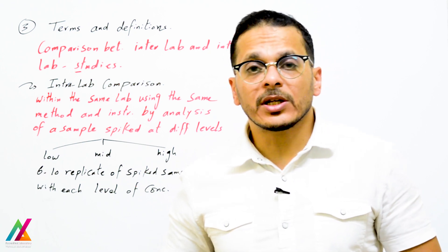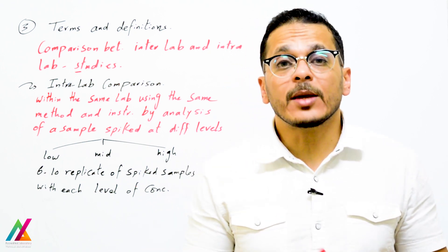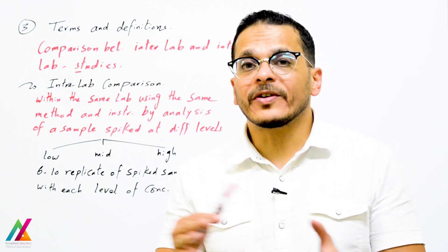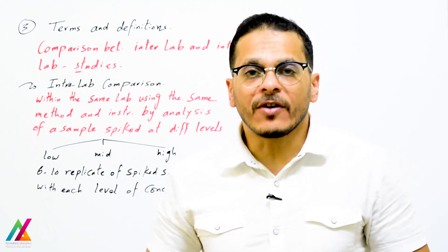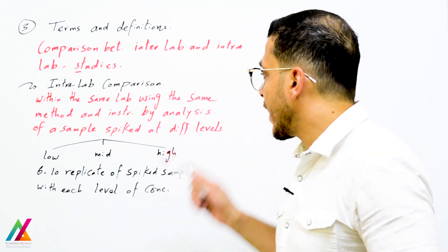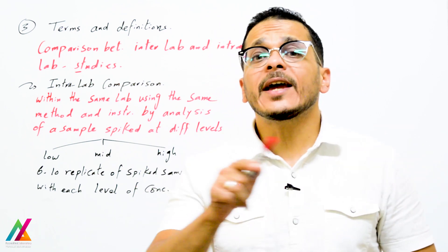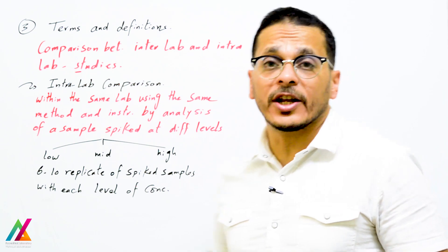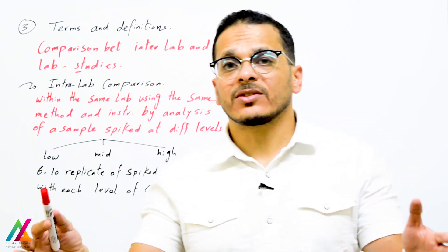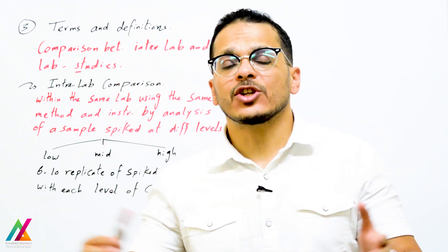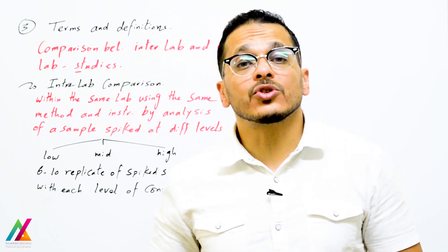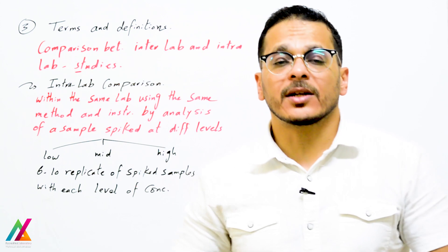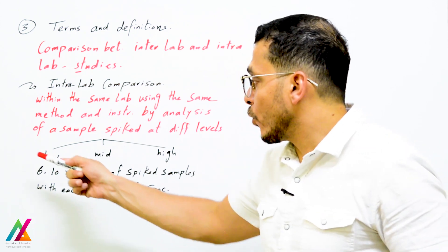Intra-lab comparison is performed within the same laboratory using the same method and the same instrument to evaluate or validate or verify that method. It involves analysis of a sample spiked at different concentration levels — low, mid, and high. These levels shall cover the range of concentrations expected to be measured by the method for the target analytes.